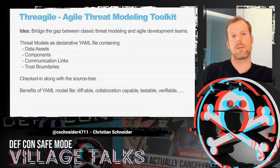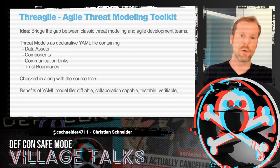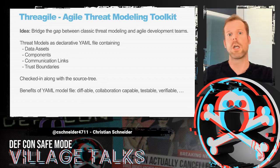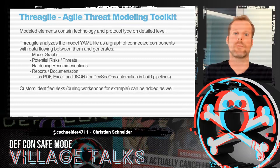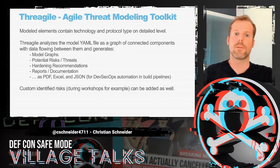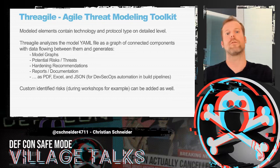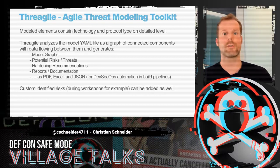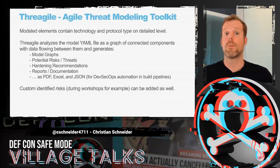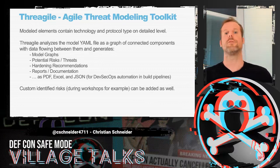That YAML file can be checked into the source tree as any other artifact. The benefits are that it's diff-able, collaboration capable, testable, verifiable, and you can easily start along with the project. The modeled elements, especially the technical elements in that YAML file, contain very detailed levels of the technology and the protocols chosen in order to enable very good risk generation from risk rules.